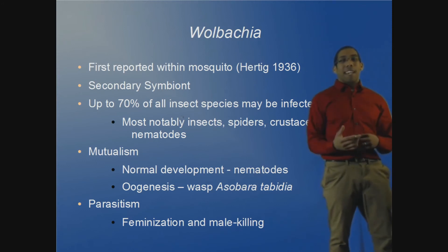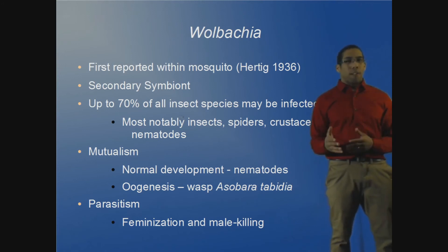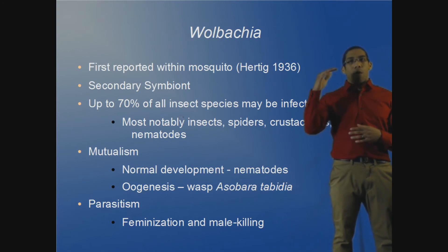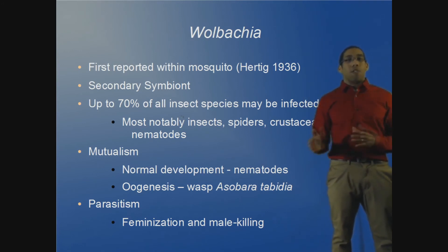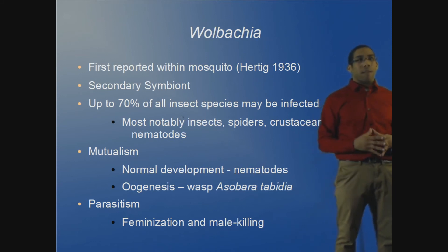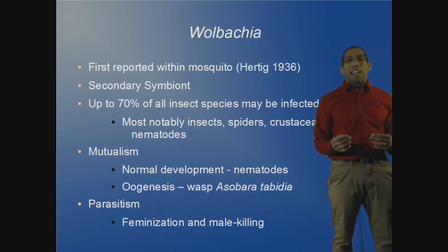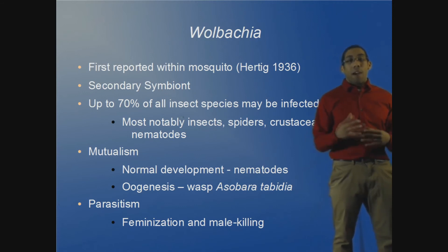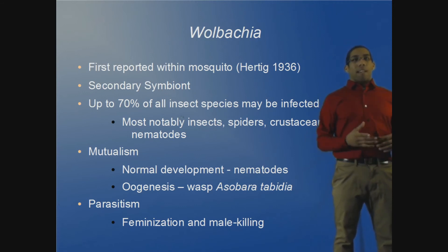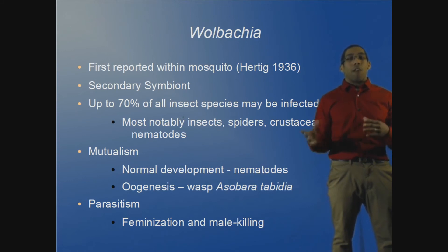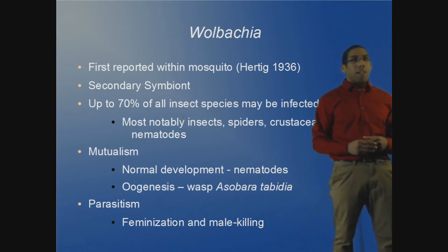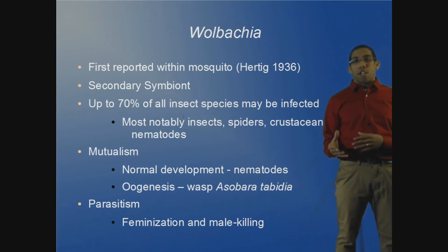Wolbachia is a secondary symbiont, meaning it is horizontally transferred rather than vertically transferred like Bucknera. Being horizontally transferred gives Wolbachia a much wider range within insects — a large group of animals. Wolbachia is remarkably nimble, infecting nearly 70% of all insect species, as well as spiders, crustaceans, and nematodes.